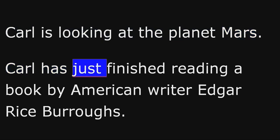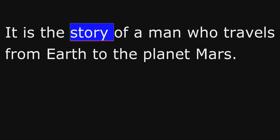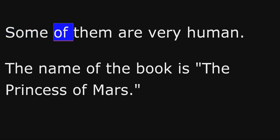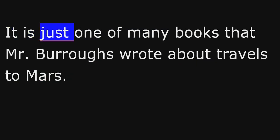Carl has just finished reading a book by American writer Edgar Rice Burroughs. It is the story of a man who travels from Earth to the planet Mars. He meets many strange and interesting creatures there. Some of them are very human. The name of the book is The Princess of Mars. It is just one of many books that Mr. Burroughs wrote about travels to Mars.